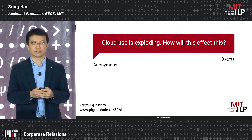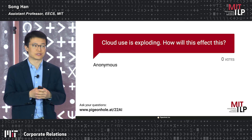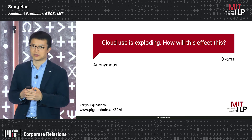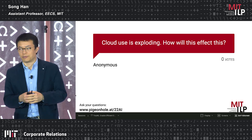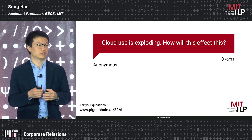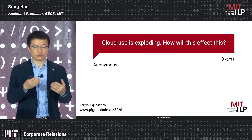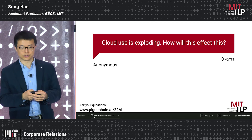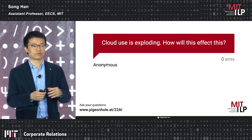Q&A: Cloud use is exploding — how will this affect edge AI? The synergy between cloud and edge is motivating us to split workloads across both sides, even doing part of the computation on the edge and part on the cloud. There are scenarios where cloud computing is insufficient: privacy-critical applications, self-driving cars where latency is critical, and rural areas without internet connectivity. Cloud and edge devices can complement each other, and for non-latency-critical tasks they can collaborate through approaches like federated learning.